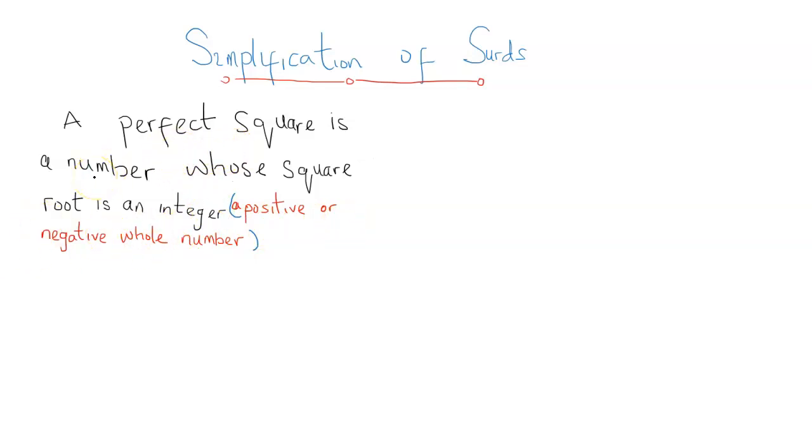Perfect squares are also called square numbers. Going by this definition, it's obvious that 1 is a perfect square because the square root of 1 is ±1. Also, 4 is a squared number because the square root of 4 is ±2. Also, 100 is a squared number because the square root of 100 is ±10.